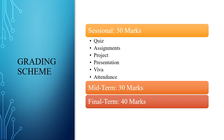The grading scheme at Lahore Leeds University for this course is out of 100 marks divided into three categories. Session marks are 30 marks and include quizzes, assignments, projects, presentations, vivas, and attendance. There will also be a midterm worth 30 marks and a final term worth 40 marks.